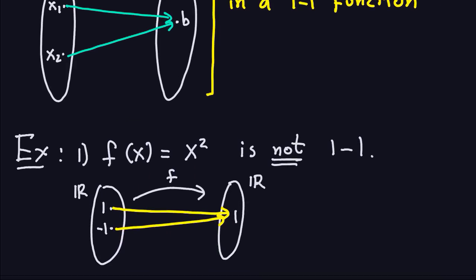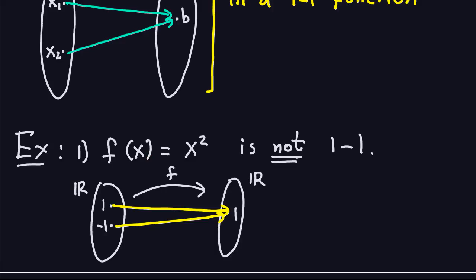Let's look at a couple of examples. Consider the function f(x) = x², where the domain and codomain are all the real numbers. This function is not one-to-one. Why? Because I have two different inputs, 1 and -1, for which the rule gives the same output: 1² = 1 and (-1)² = 1. So two different inputs go to the same output, which means it's not one-to-one.